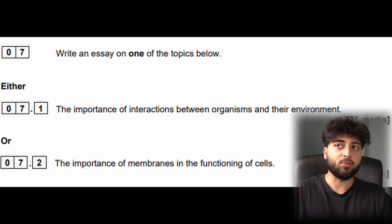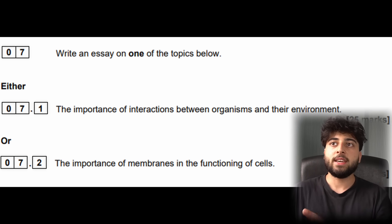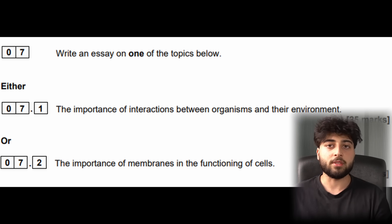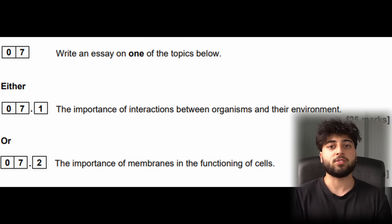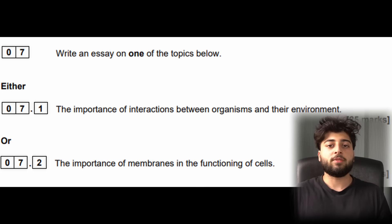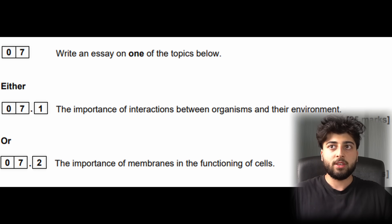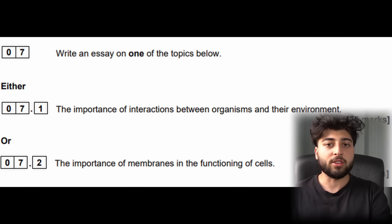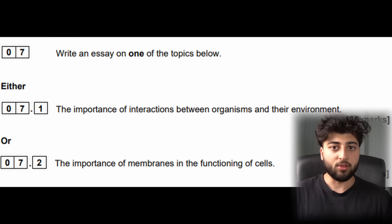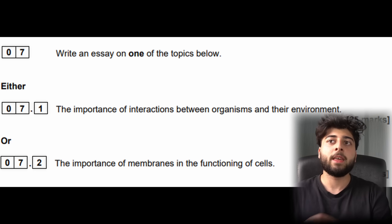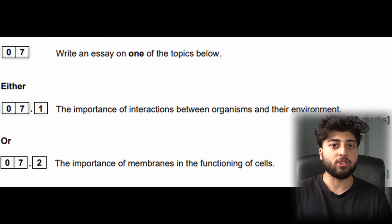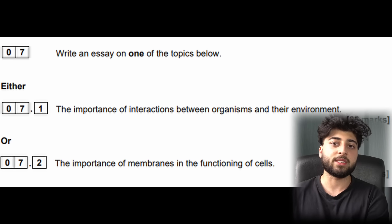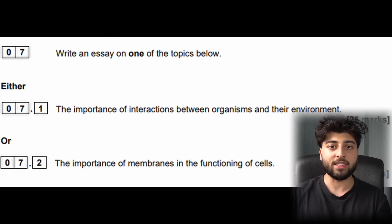Let's go back to the 2023 questions. 'Between organisms and the environment' means you cannot talk about anything within an organism — you have to talk about stuff between organisms and their environment, outside of the organism. Whereas the second question, 'the importance of membranes in the functioning of cells,' you can only talk about membranes regarding cells. Sometimes they say something that specific and you might not pick up on it and end up losing marks for talking about something irrelevant.